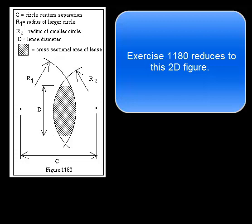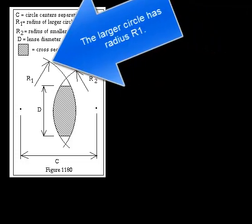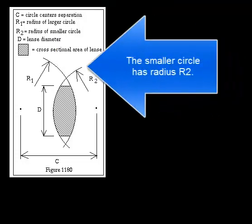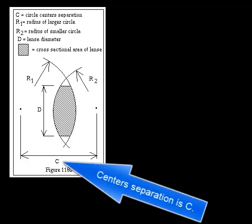Exercise 1180 reduces to this two-dimensional figure. The larger circle has radius R1. The smaller circle has radius R2. Center separation is C.